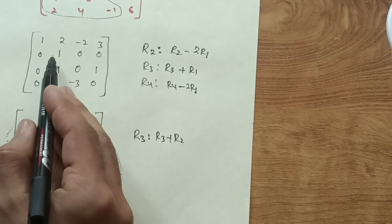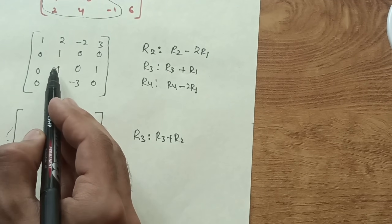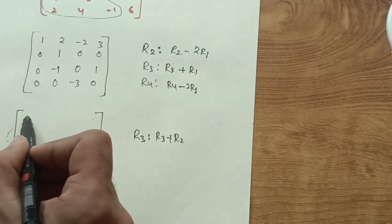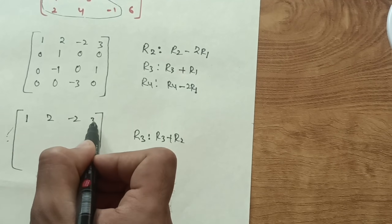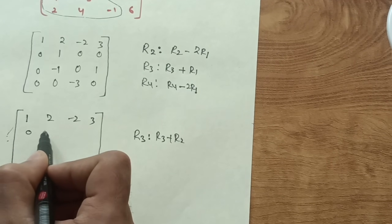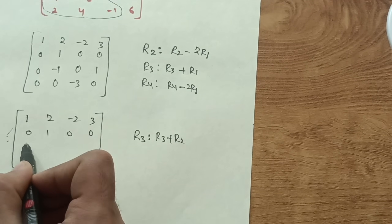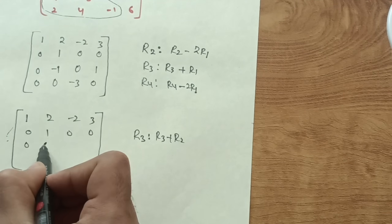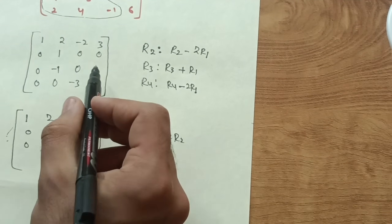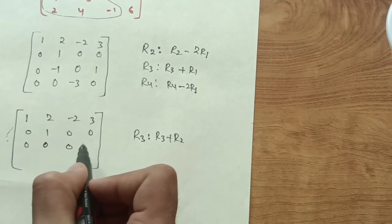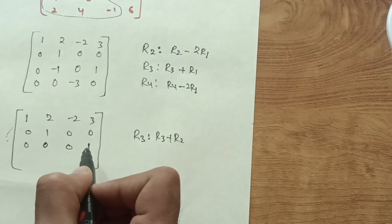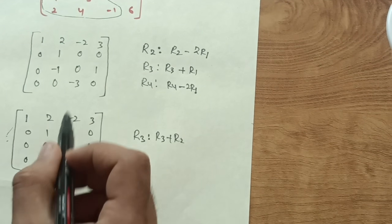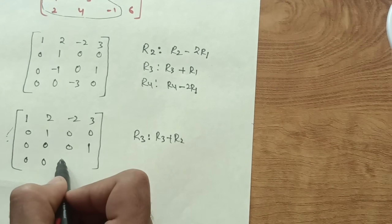After R3 + R2: -1 + 1 = 0, so row 3 first becomes [0, 0, 0, 1]. The matrix at this stage is: [1, 2, -2, 3], [0, 1, 0, 0], [0, 0, 0, 1], [0, 0, -3, 0].